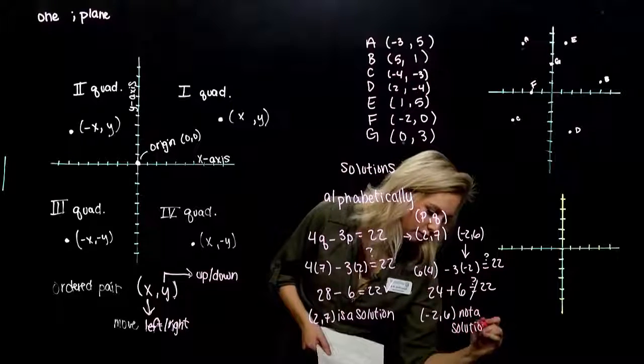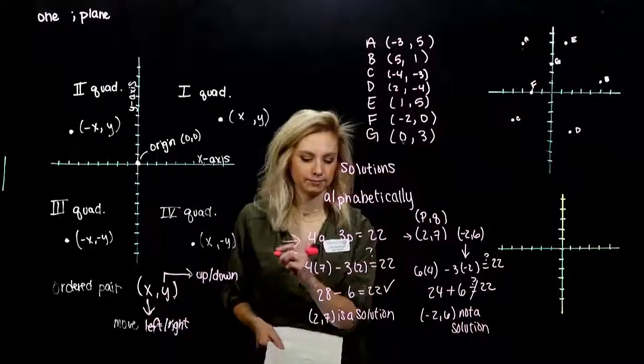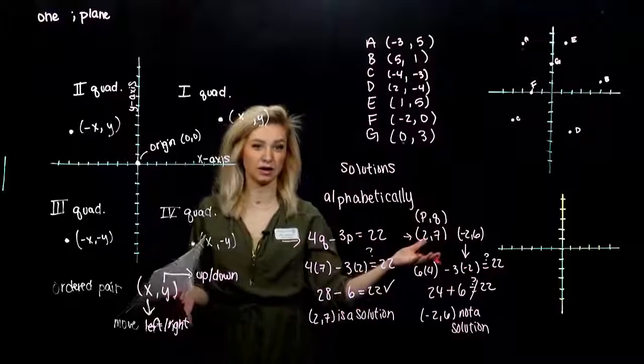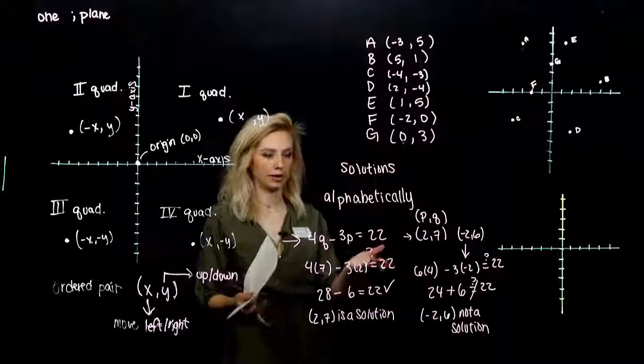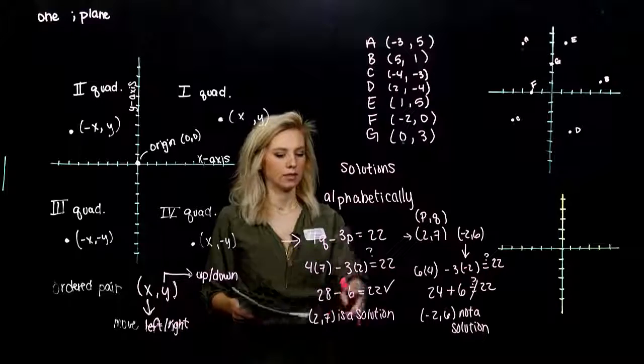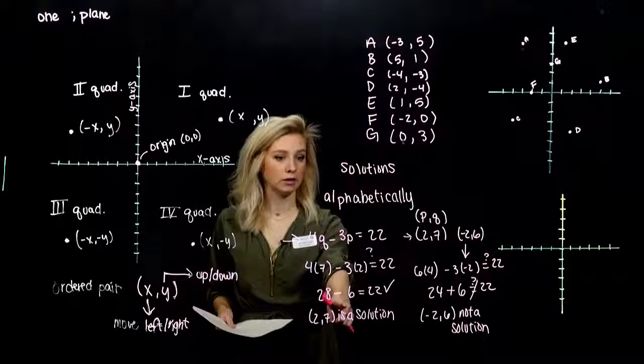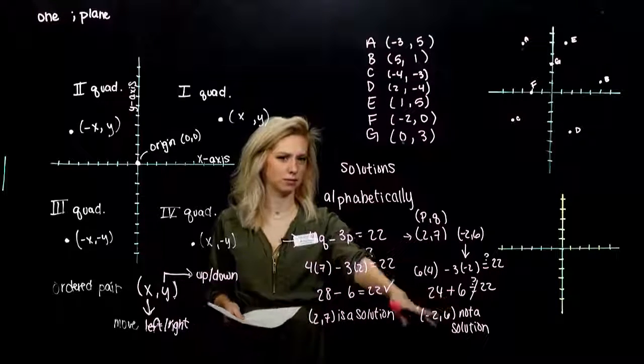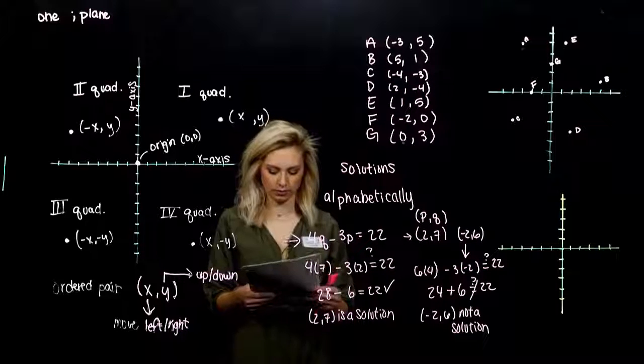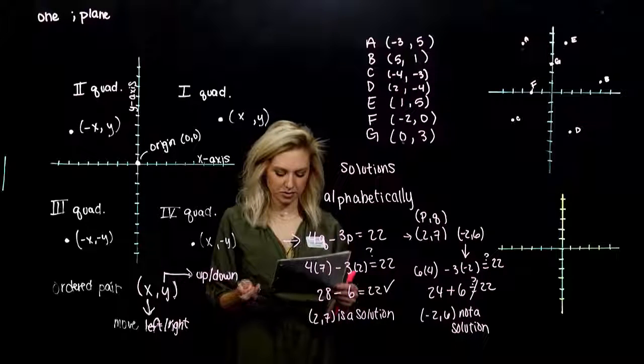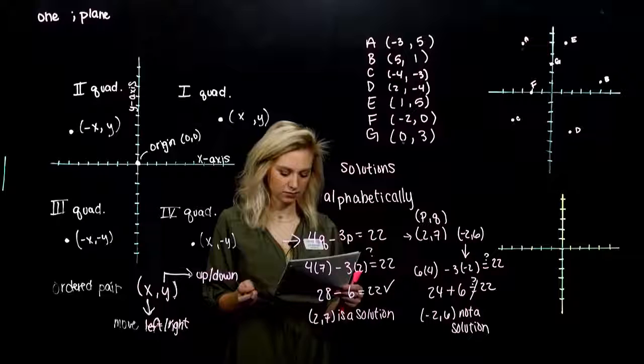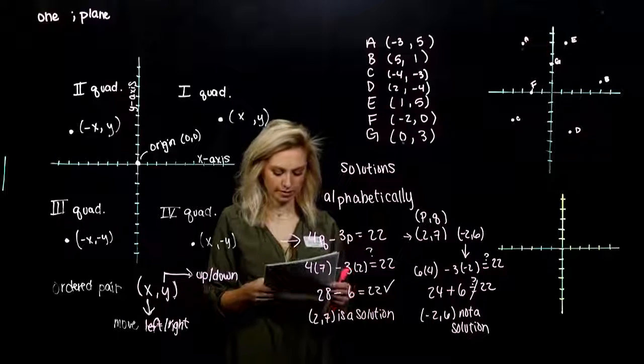If we were going to graph this equation on a coordinate plane, it would look like a line. This point is going to touch the line, but that one isn't. It's going to be floating off somewhere else. So go ahead and take that try. Determine whether 2 minus 4 is a solution of that equation.